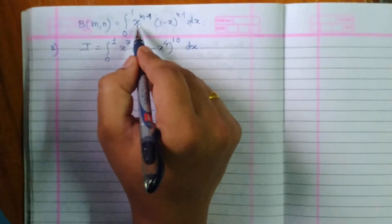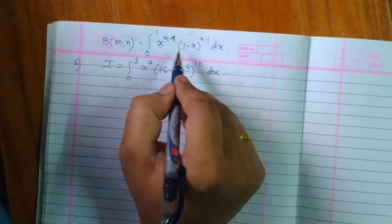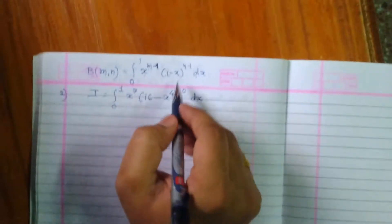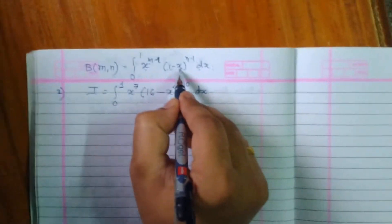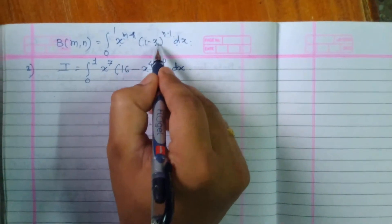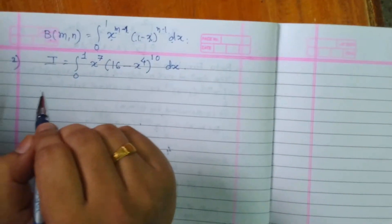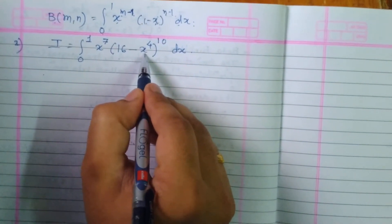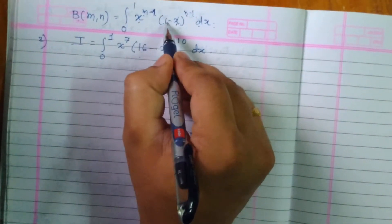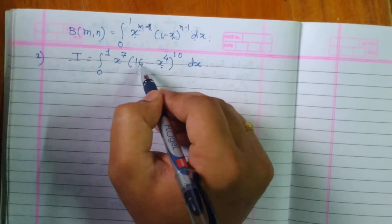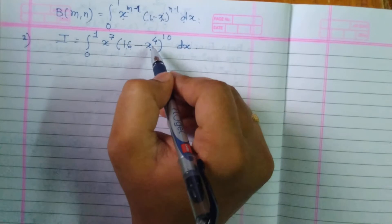Now here we require a variable to some power times 1 minus variable to some power. Have you observed here the power of this particular variable inside the bracket is 1, but here the power is 4. Second thing, here it is 1 minus variable, and here it is 16 minus x raised to 4.